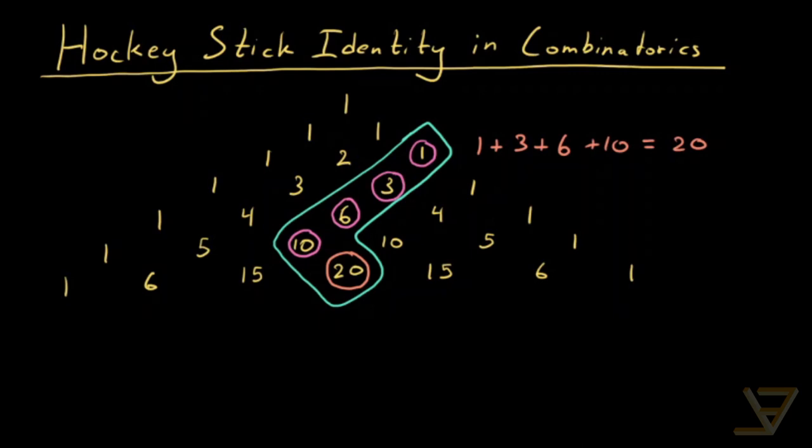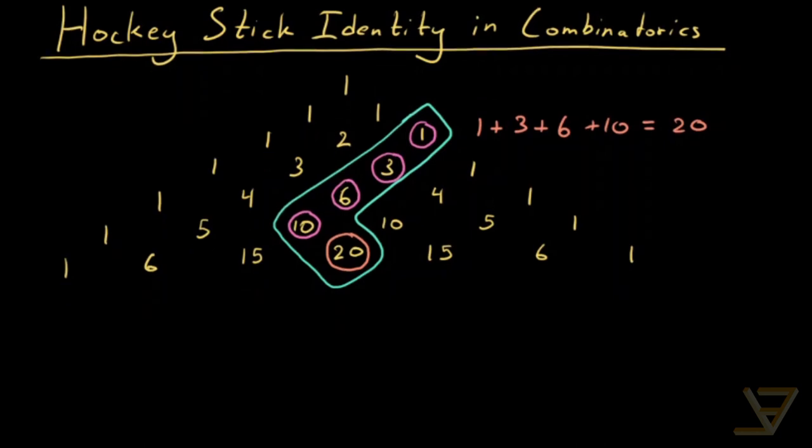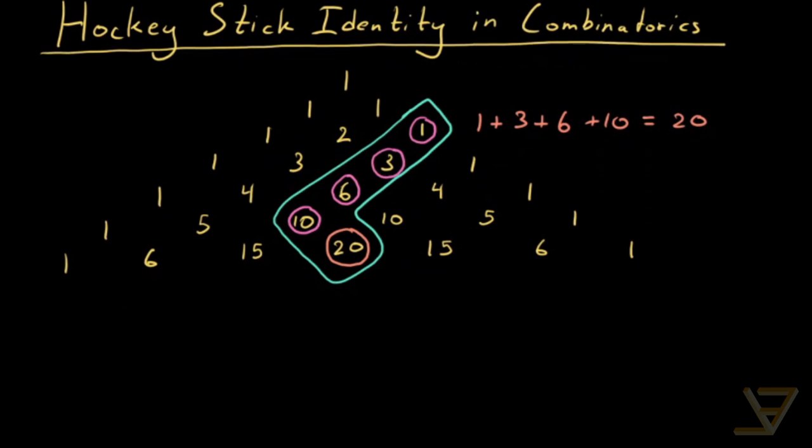If we do some experimentation we find that the correct prediction should be that the sum of elements of the form i choose k for i equals to k all the way through to n is equal to the orange term which is n plus one choose k plus one.